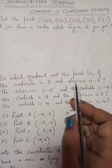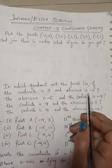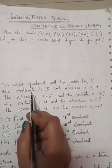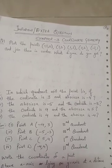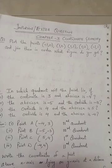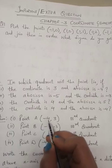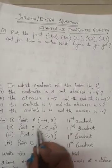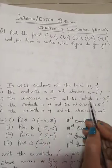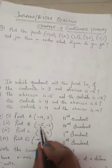Question 2: In which quadrant will the point lie if the ordinate is 3 and the abscissa is -4? Your ordinate is your y-coordinate and your abscissa is your x-coordinate. The x-coordinate is written first, so the point is (-4, 3) — negative x, positive y — so it will lie in the second quadrant.